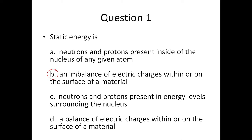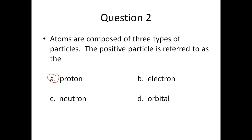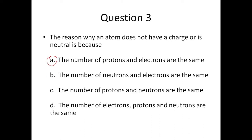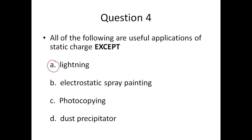The answer for question one is B — an imbalance of electric charges within or on the surface of a material. That is what static energy is. Question two, the answer is A. Atoms are composed of three types of particles; the positive particle is referred to as the proton. Question three is A — the reason why an atom is neutral is because the number of protons and electrons are the same. Question four: all of the following are useful applications of static charge except A, lightning.